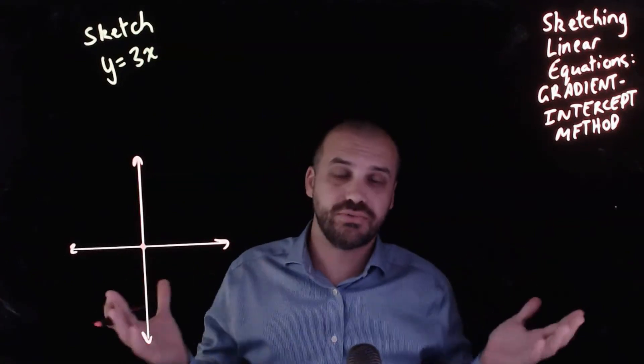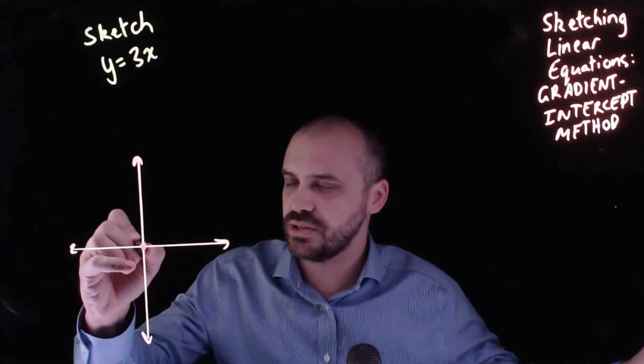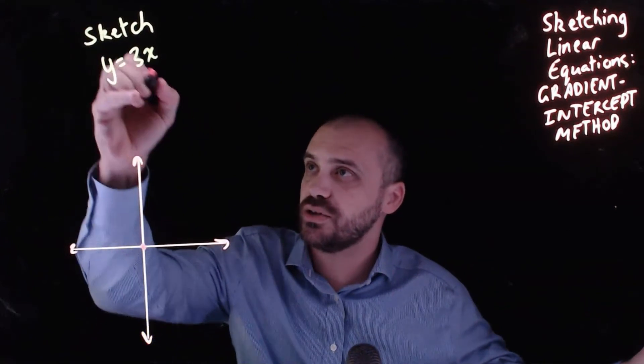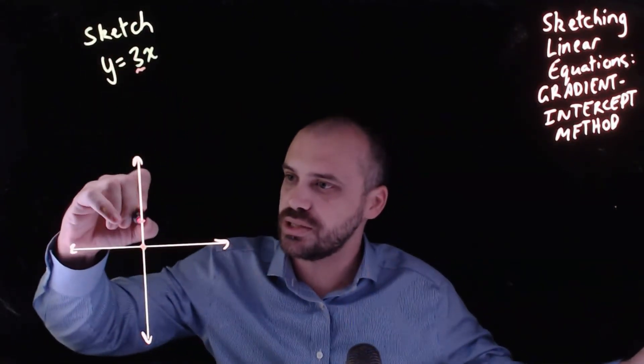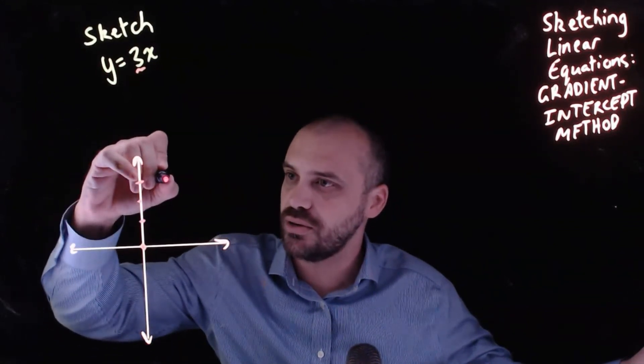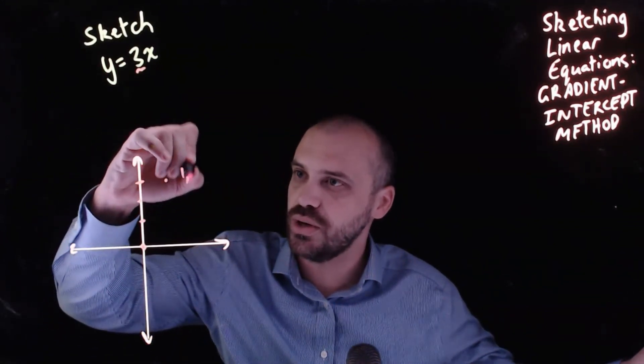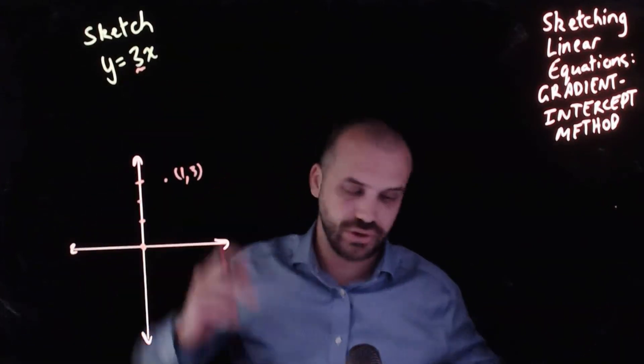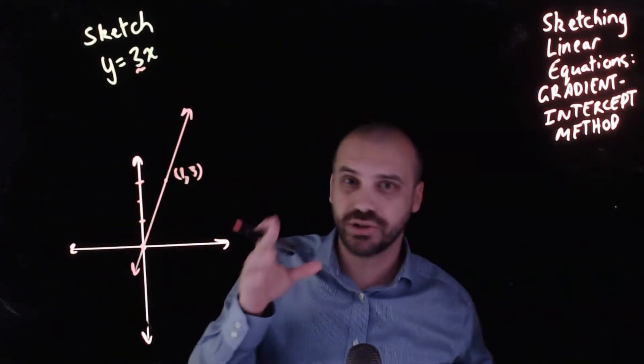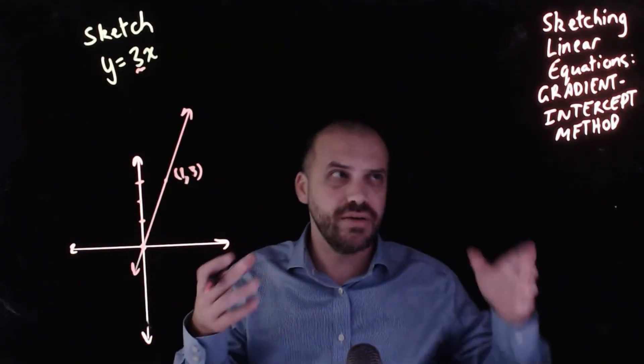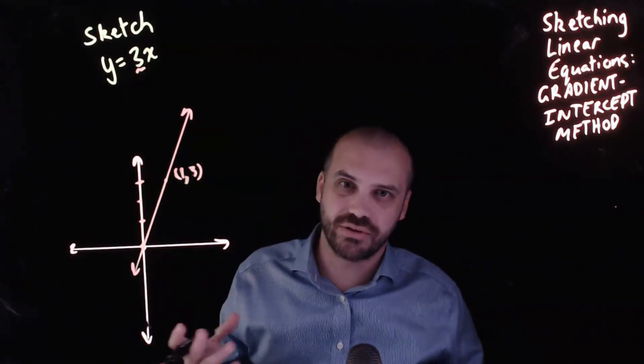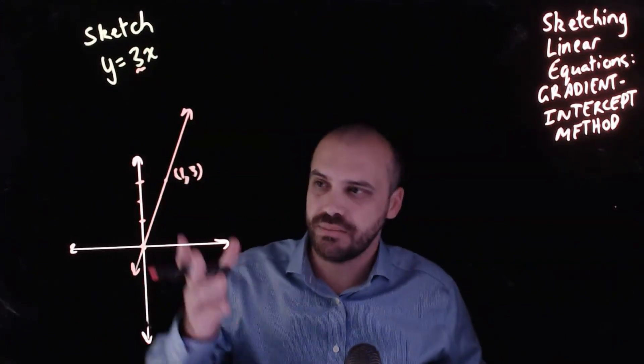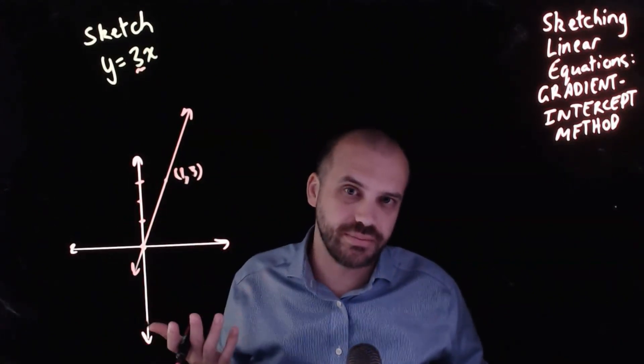At which point it's really easy. The y intercept is 0. We can see the gradient of this is 3, 3 over 1, which means that we go up 3 and 1 across. So 1, 3, and we draw a line through there. So having sketched a lot of lines in my time, I would never use the gradient intercept method except when the y intercept is 0. And then I really don't have a choice because I can't use the x and y intercept method.